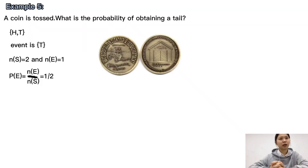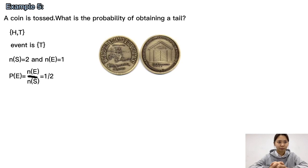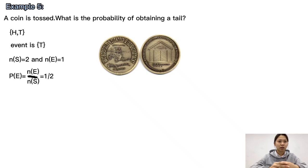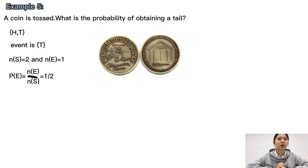Fifth example: A coin is tossed. What is the probability of obtaining a tail? The sample space for this experiment is {heads, tails}, and the event is {T}. So N(S) = 2 and N(E) = 1. Therefore, the desired probability is P(E) = N(E) / N(S) = 1/2.